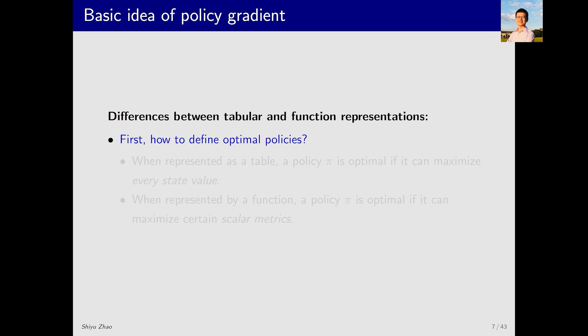Now let's formally compare the difference between tabular and function representations. As we just mentioned, there are three key points. The first difference is how we define optimal policies. If the policy is represented by a table, do you remember the definition of an optimal policy? An optimal policy π* is defined such that for every state s, the state value V_π*(s) corresponding to the optimal policy must be greater than or equal to V_π(s) for any other policy π. In other words, the state value of π* should be greater than that of all other policies. However, when policies are represented as functions, the definition of optimal policies is different. In particular, a policy is optimal if it can optimize a scalar metric. What exactly this scalar metric is will be introduced soon. So because the definition of optimal policies differs, it leads to many other differences.